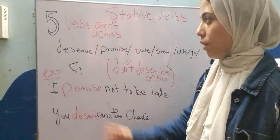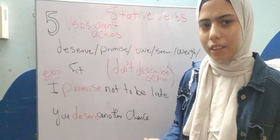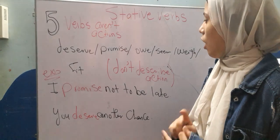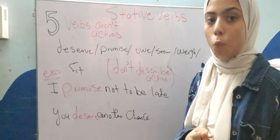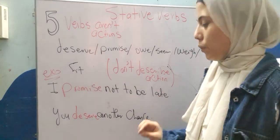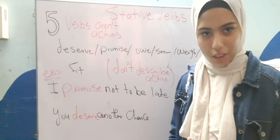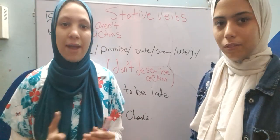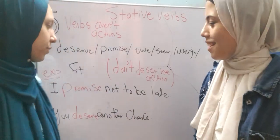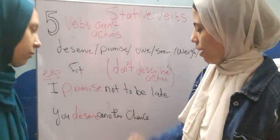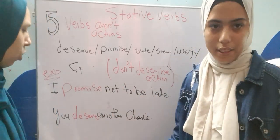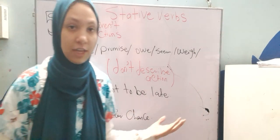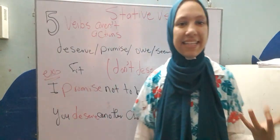The fifth category is verbs which aren't actions, such as: deserve, promise, owe, seem, and wait. When I use them, I'm rarely describing an action. For example: 'I promise not to be late' — no action is done. Or: 'You deserve another chance' — again, no action.